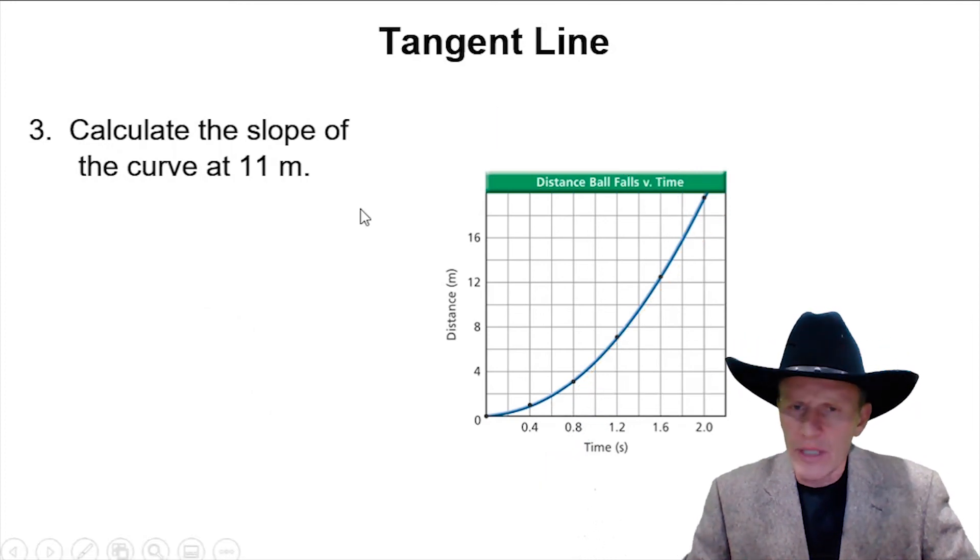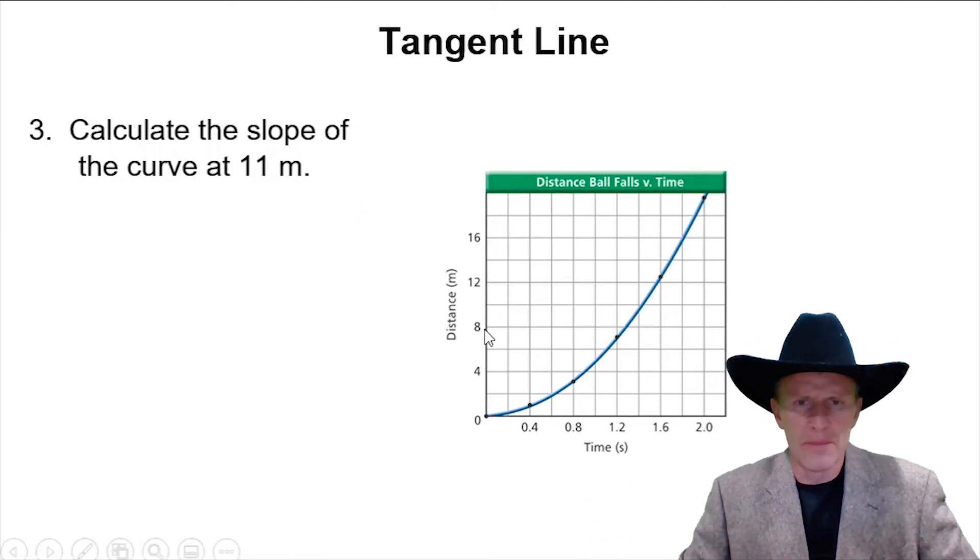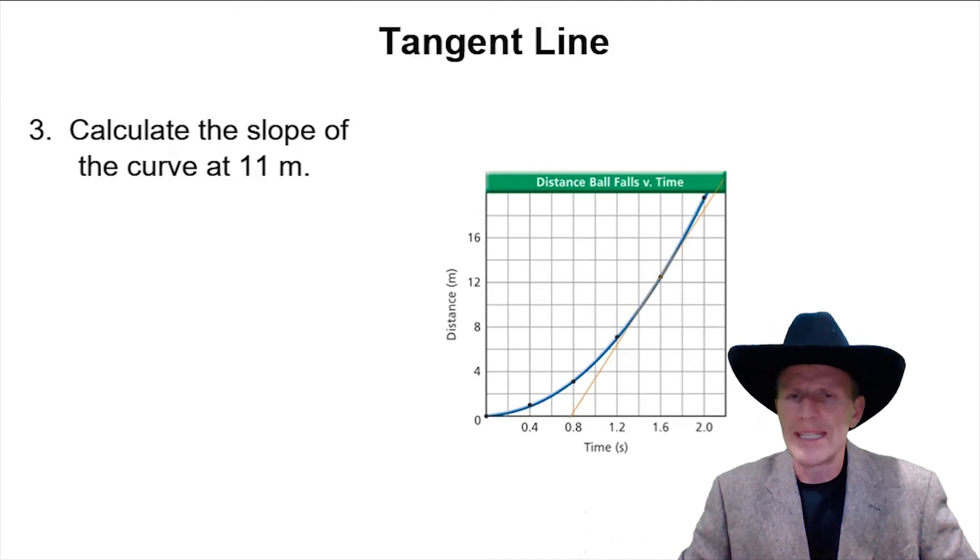So now let's look at 11 meters. So if we were to find 11 meters, 8, 12, 10's in the middle, so 11 would be right here, right at the tip of the mouse. If we drew a line, that would be the tangent.